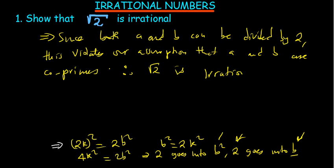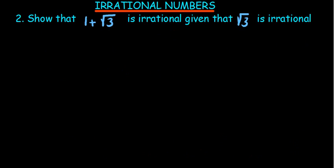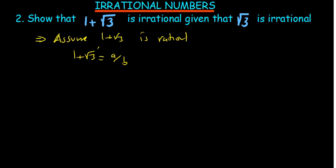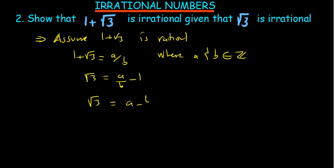Show that 1 plus root 3 is irrational, given that root 3 is irrational. We assume that 1 plus root 3 is rational, so it can be written as A over B. Taking 1 to the other side leaves root 3 equal to A over B minus 1, which gives root 3 equal to A minus B over B, where A and B are integers. Whenever you subtract integers the answer is an integer, and an integer divided by an integer is rational, so this part is rational.